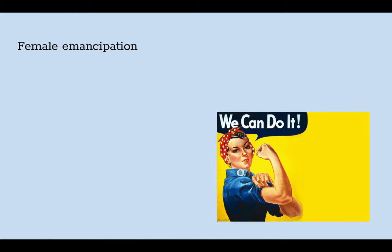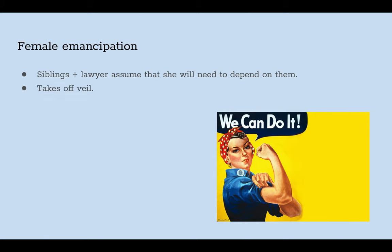The next theme is female emancipation. The siblings and the lawyer assume that she will need to depend on the family. However, once she takes off the veil, we see that she has emancipated herself from such stereotypes of female behavior. The veil symbolizes how throughout her whole life she has kept her true self and feelings hidden, and her voice had been taken away from her by society. We see how she has financial and emotional independence as she explains how she is going to take care of herself, assuming independence from her family.